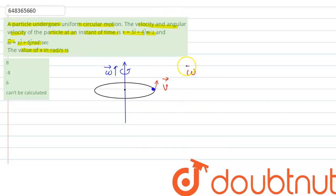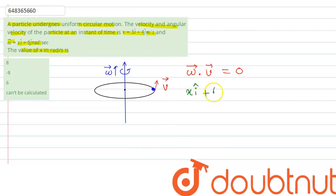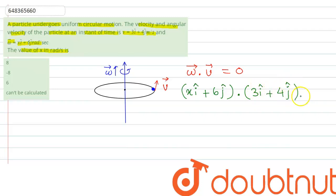When two vectors are perpendicular to each other, their dot product will become zero. So this is the relation we are going to apply. Here we have omega = xi cap + 6j cap, and we are going to dot product it with V = 3i cap + 4j cap, and this is going to be zero.